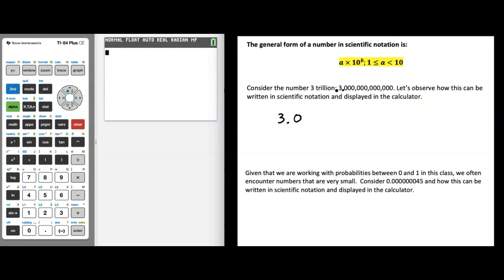We need to think: if we have 3.0, how many times do I need to multiply it by 10 to get to 3 trillion? That will be what the power of 10 is. Remember, every time you multiply by 10, you're adding a zero. So starting from 3.0, multiplying by 10 to the 1st, 2nd, 3rd... all the way up to 10 to the 12th gets me to 3 trillion. So in scientific notation, 3 trillion is 3.0 times 10 to the 12th power.